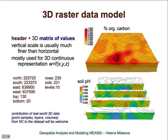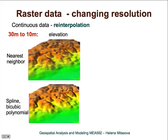We can also have a fully continuous three-dimensional raster model where values change both horizontally and vertically. These are represented by a 3D matrix of values, and the layers are actually interpolated — not represented as separate two-dimensional rasters.